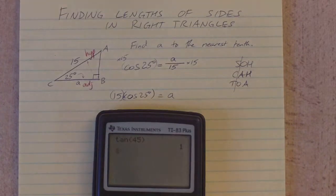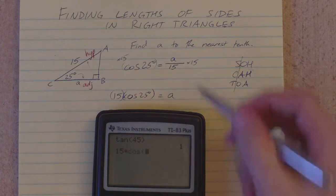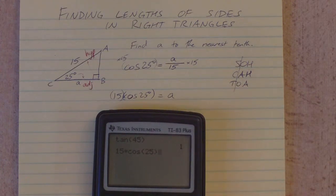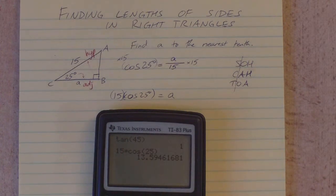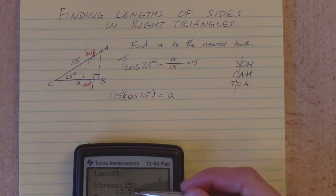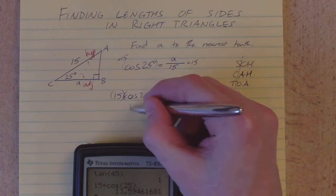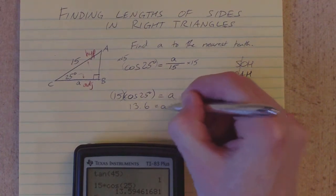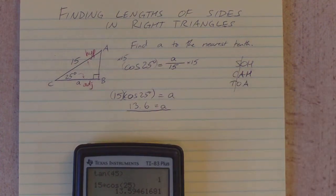We're going to type in here 15 times the cosine of 25 degrees gives us 13.5946, etc. I only need this to the nearest tenth. I'm going to round off to the first decimal place. 13.6 is the length of that side A. Done.